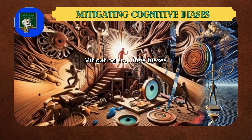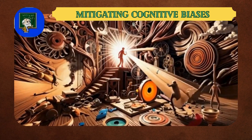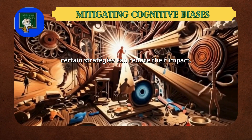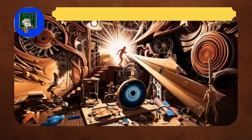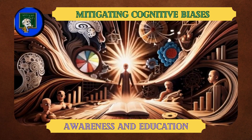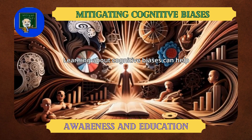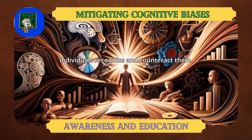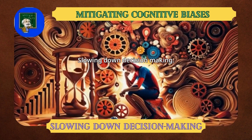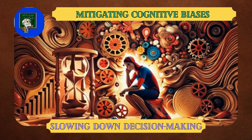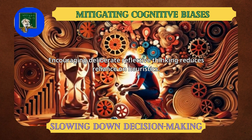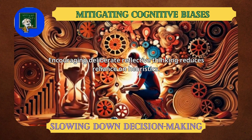Mitigating Cognitive Biases: while biases are deeply ingrained, certain strategies can reduce their impact. Awareness and education: learning about cognitive biases can help individuals recognize and counteract them. Slowing down decision-making: encouraging deliberate, reflective thinking reduces reliance on heuristics.